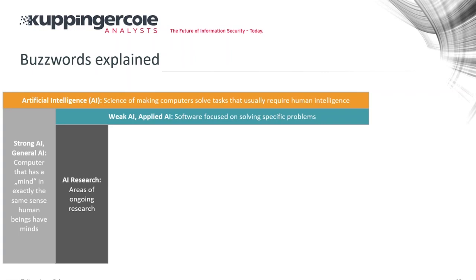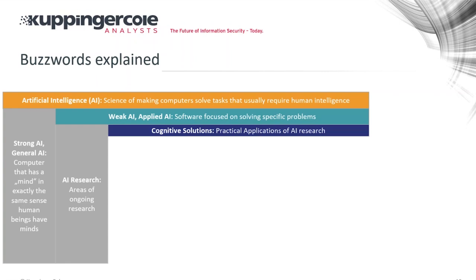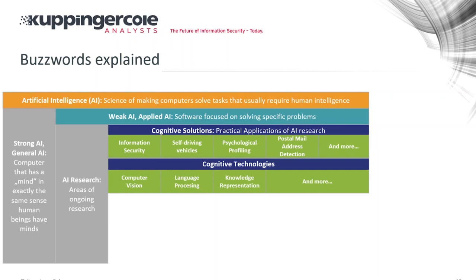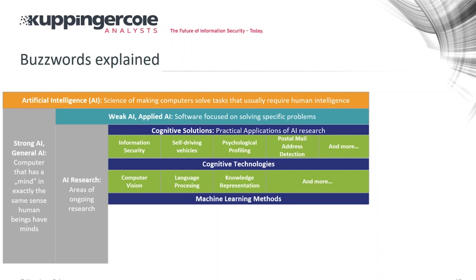There's a lot of research going on that will lead to further solutions, but there's also a lot already available — things I call cognitive solutions or practical applications of AI research, where AI augments the human to do certain things better and more efficiently. The solutions we find in information security, including identity access, are in areas like self-driving vehicles, psychological profiling, and postal address detection, based on various cognitive technologies: text-to-speech, language processing, computer vision.